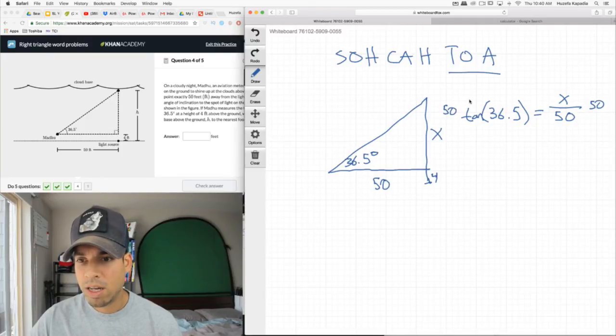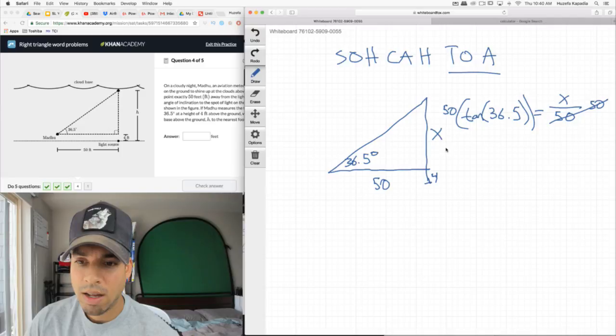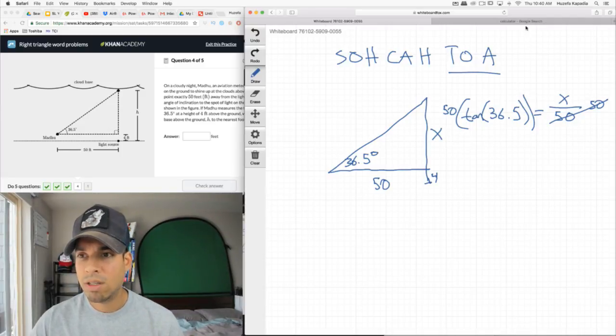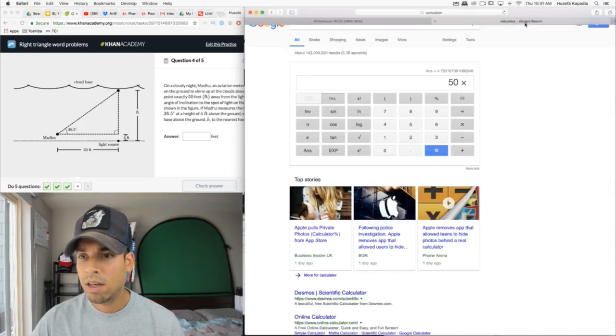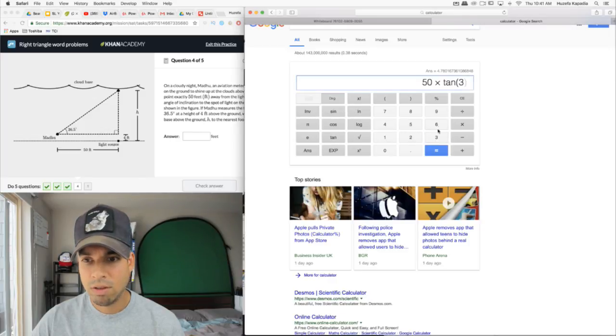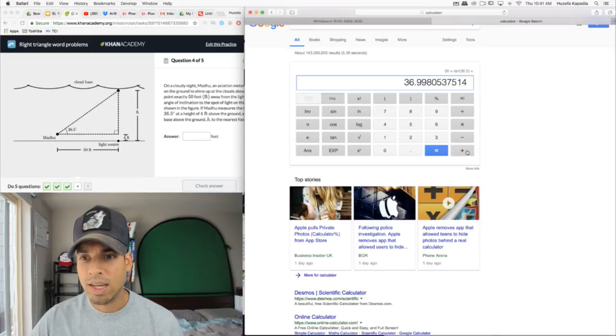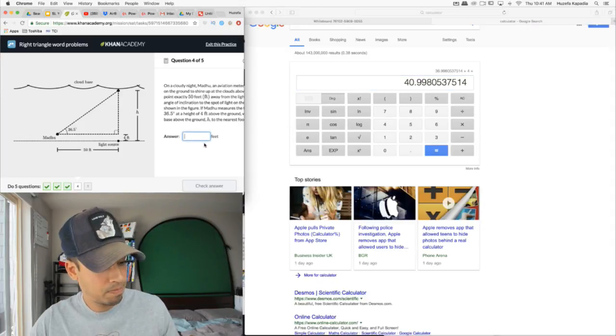Tangent of 36.5 equals opposite over adjacent. This is a one-step problem. We just multiply both sides by 50. Make sure to get this back in degrees. 50 times tangent of 36.5 equals that. Then we've got to add 4 to get us that full distance of h. And we're at 40.99 to the nearest foot. That rounds up to 41.